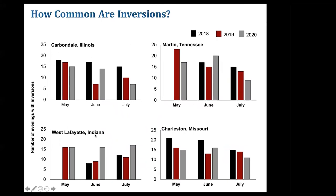These graphs show four of our locations with years represented by different colors. For example, in Carbondale, Illinois in May 2018, there were approximately 17 evenings where inversions formed. First, inversions are common across our geographies. Second, these are very conservative estimates — when defining an inversion, we take into account the accuracy of the temperature probes and how long the temperature has to be inverted. So these numbers are underestimates of how many evenings we actually had inversions.